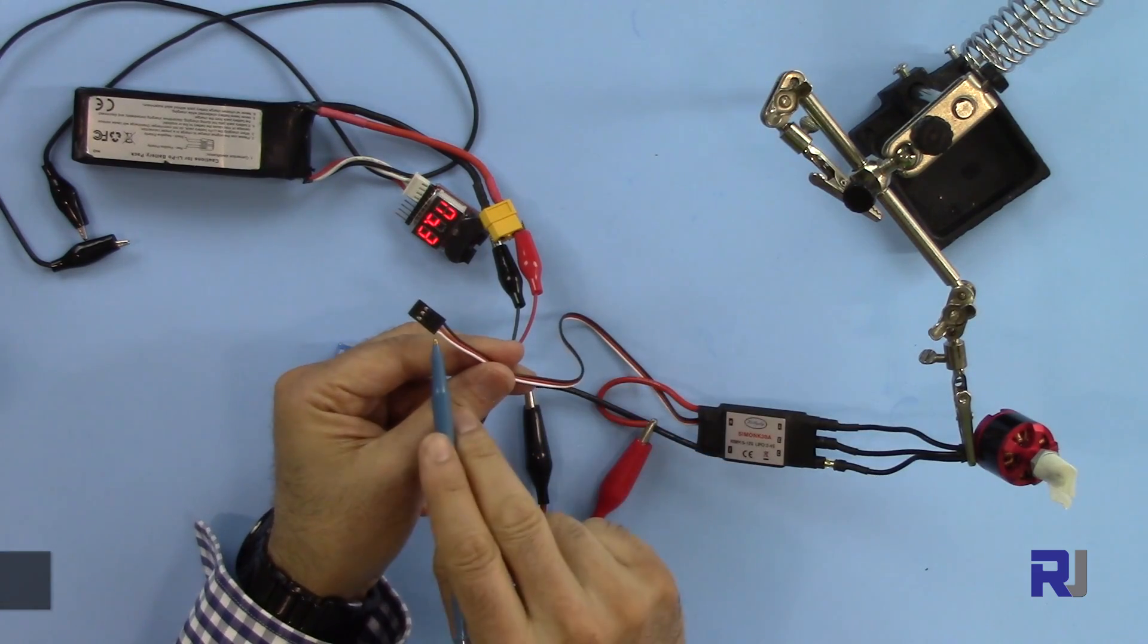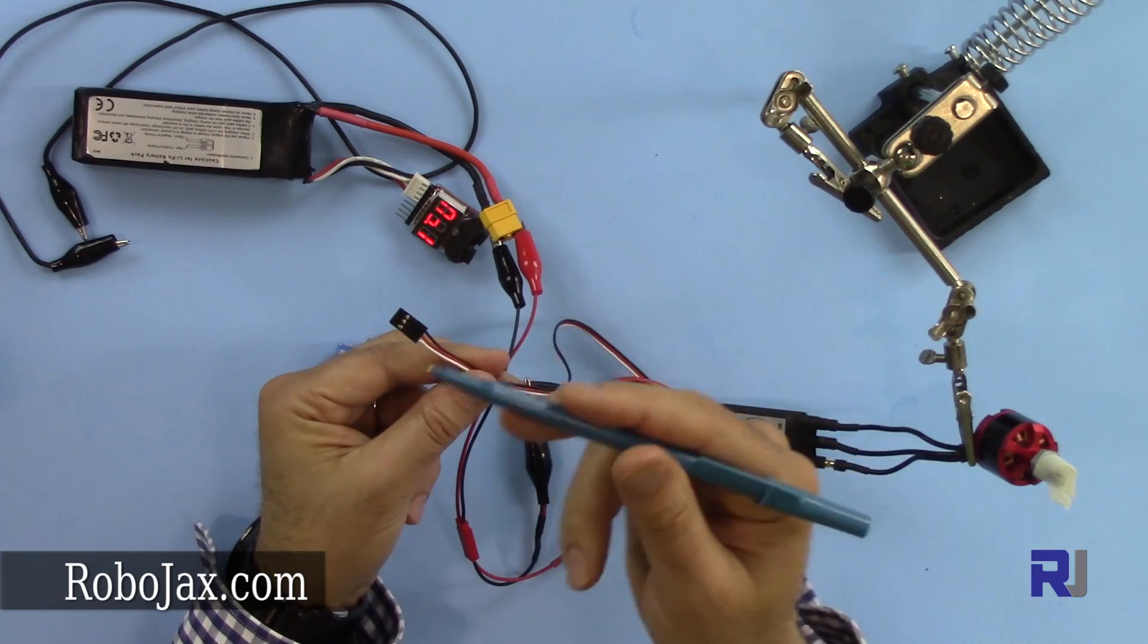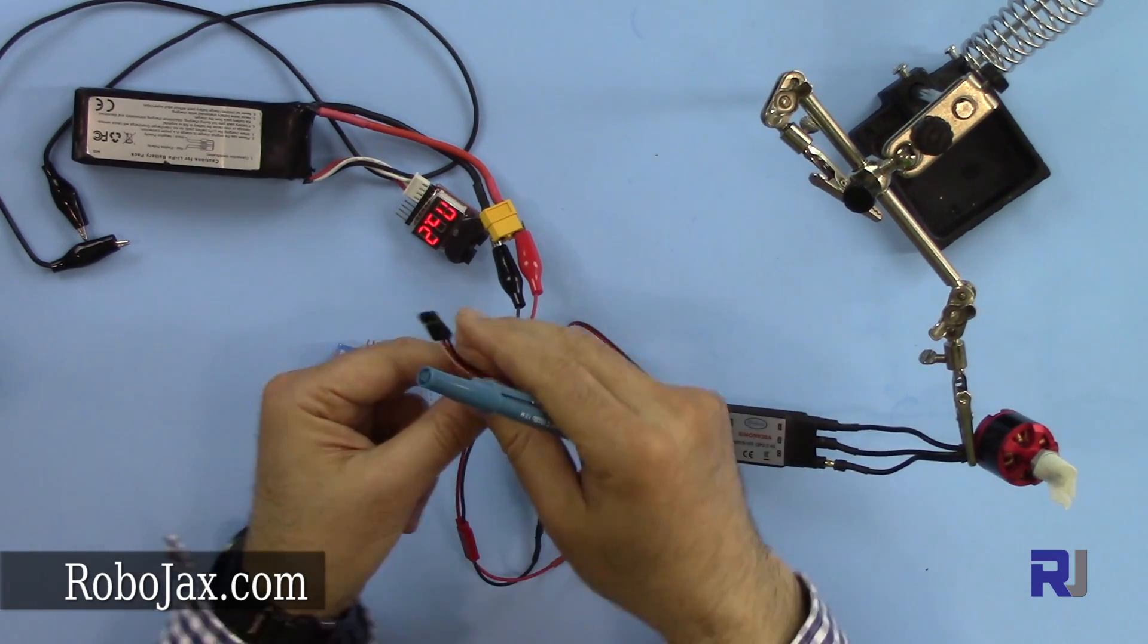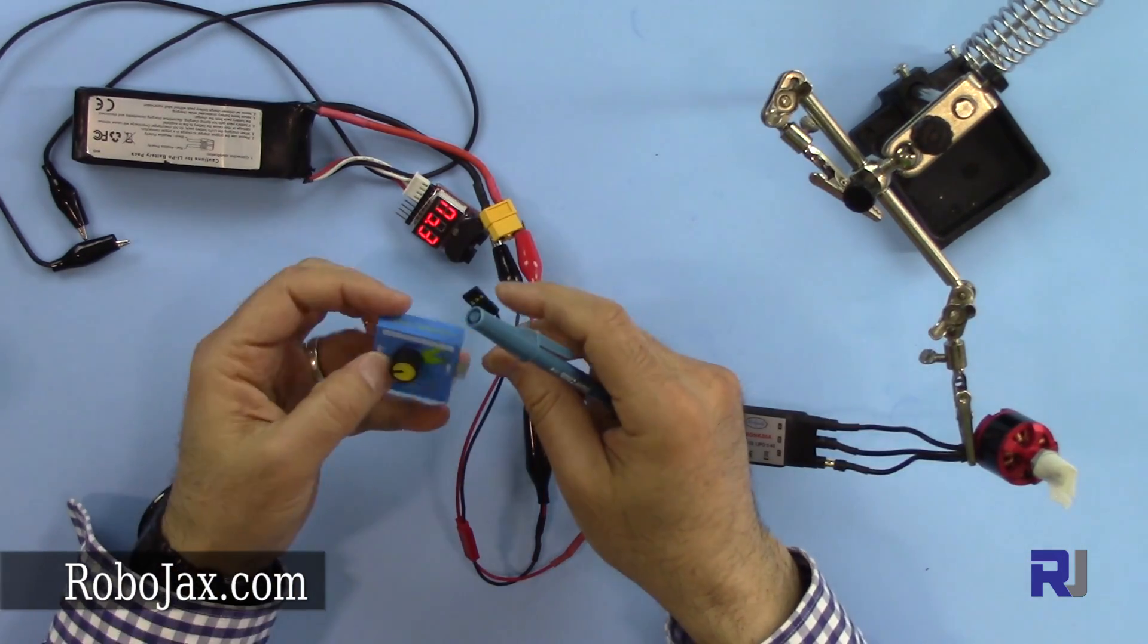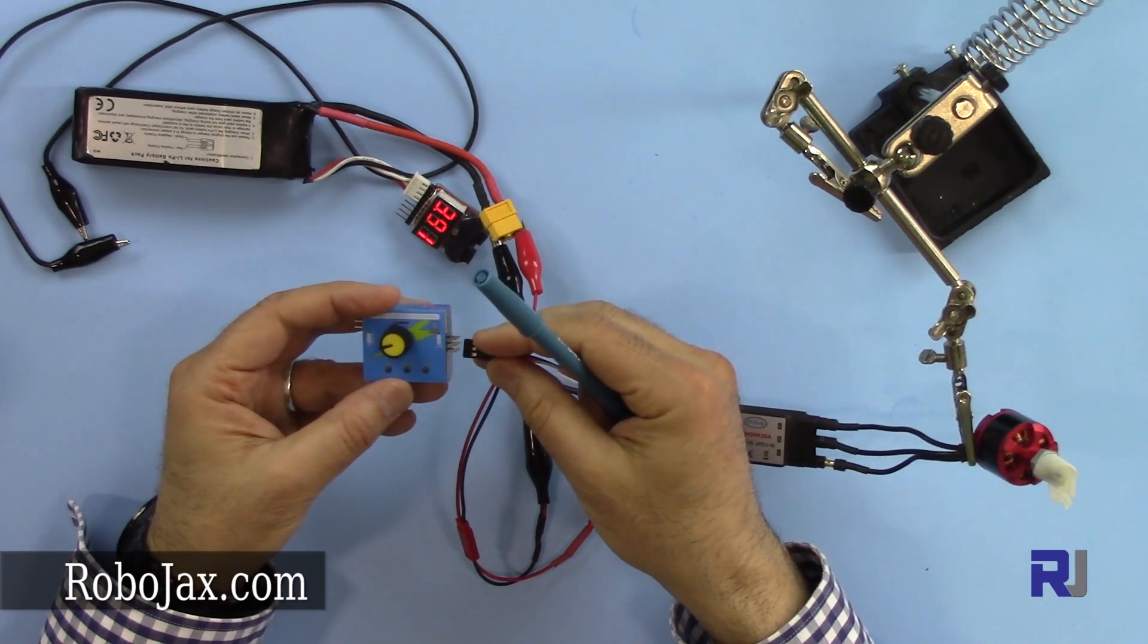So I'm getting 5 volts, but this white is a signal input. So remember that red is output from this ESC and this is input. So again here, S is on this side, that's negative, so I'm going to put the white here.